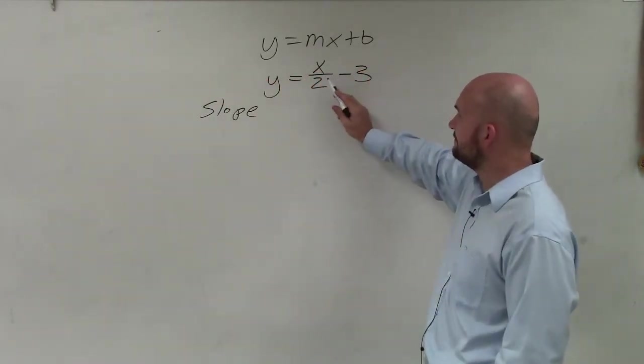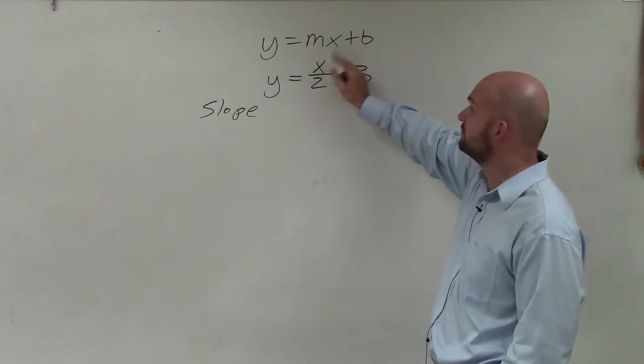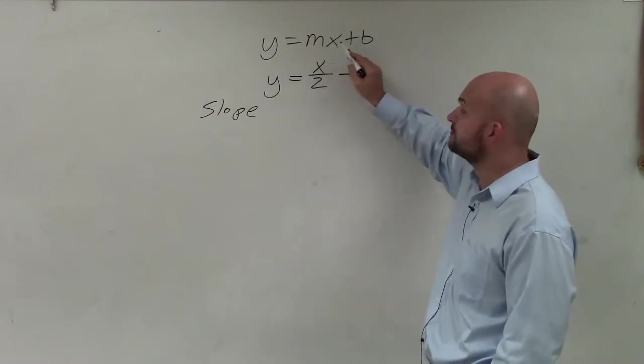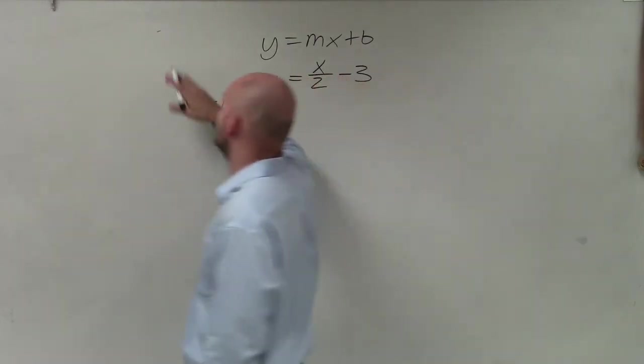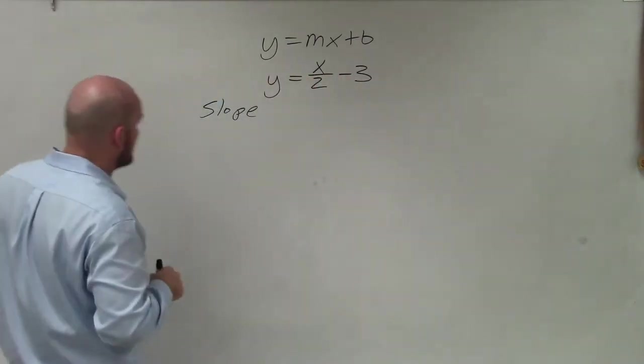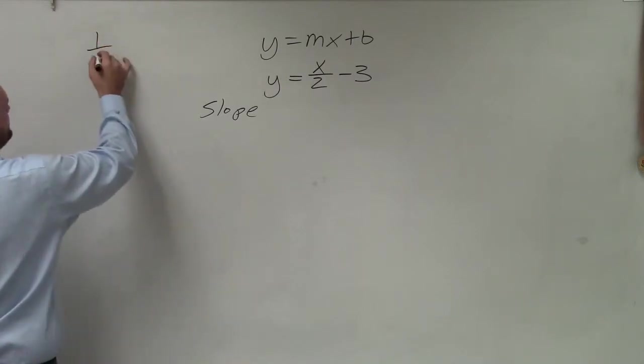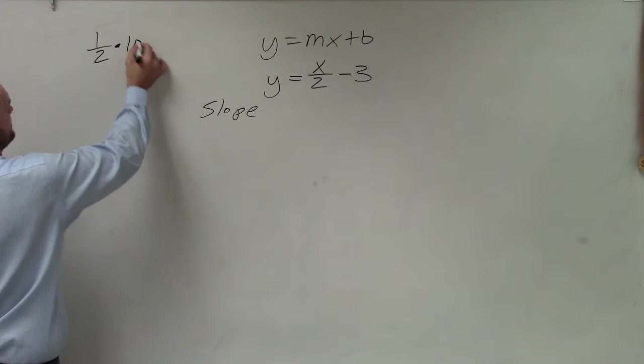How am I going to identify the slope, which is that coefficient of x, what's being multiplied by your variable x in the case of x divided by 2? So it's important for us to understand a little bit about fractions and how we use them. Let's do some numbers that we're familiar with. Let's say 1 half times 10.